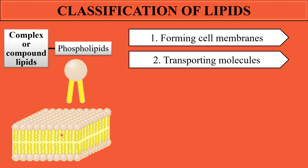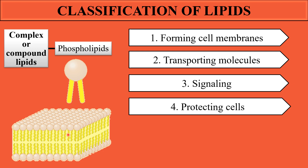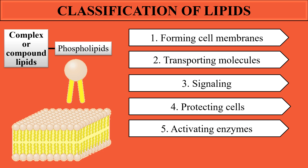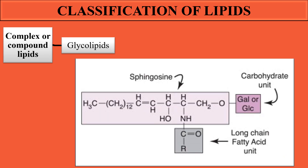Phospholipids are also involved in transporting molecules from inside to outside the cell and vice versa. They are involved in signaling, sending signals to other cells to perform specific functions. They also protect cells by providing a barrier or boundary. Additionally, they are involved in the activation of certain enzymes in metabolic processes and in the production of certain hormones.